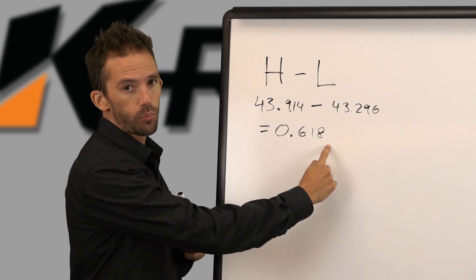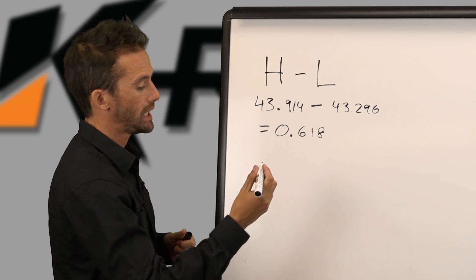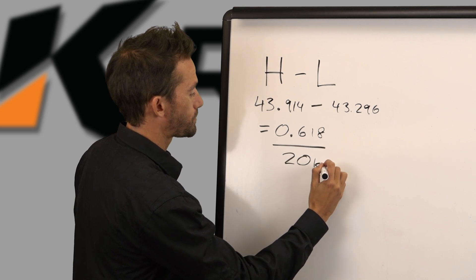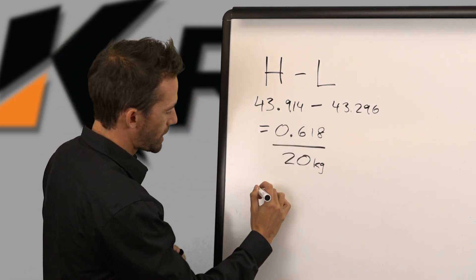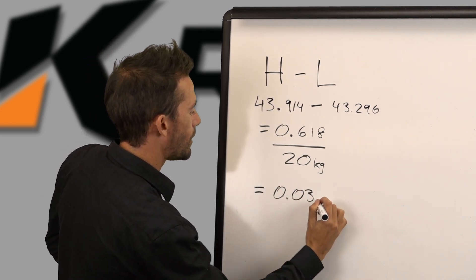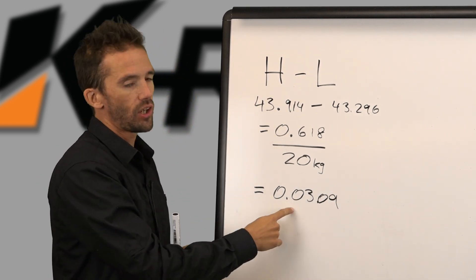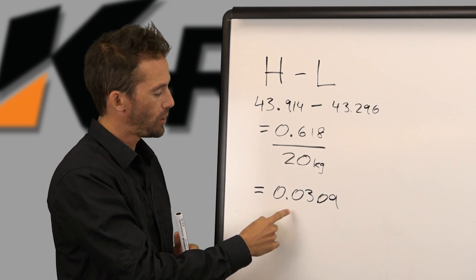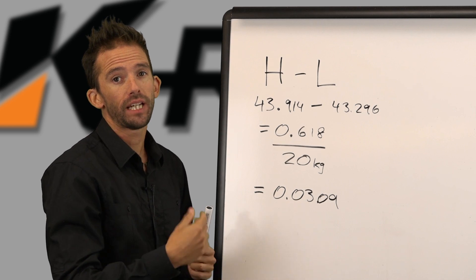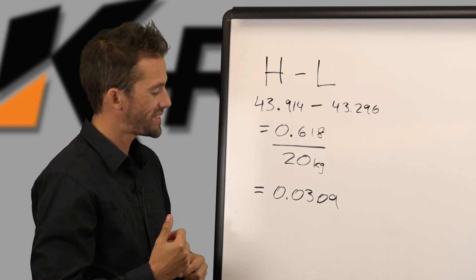What we're then going to do is take that 0.618 and divide it by the number of kilograms of difference between the two classes. From Light to Heavy in this case, we're dividing by 20 kilograms. So 0.618 divided by 20 gives us 0.0309 — that's the amount of time we expect to go slower per lap per kilo we are heavier. Around Todd Road, for each kilo you are over the class weight, you can expect to cost yourself about three hundredths of a second.